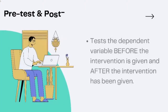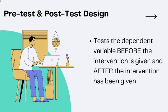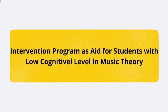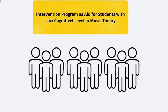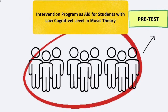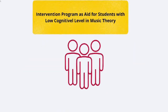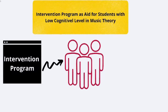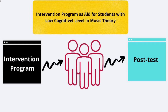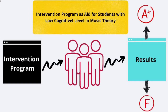The next type is the pre-test and post-test design, which tests the dependent variable before the intervention is given and after the intervention has been given. For example, a study aims to aid students with low cognitive level in music theory with an intervention program. A group of participants will undergo a pre-test to identify students with low cognitive level in music theory. Once identified, they will undergo a treatment or intervention program. Afterwards, they will have a post-test wherein results will identify if they pass or fail, and researchers can come up with conclusions.